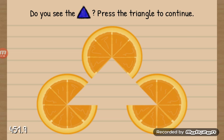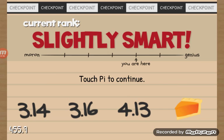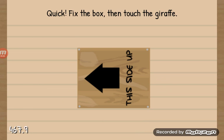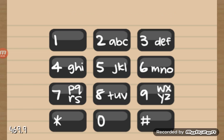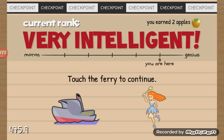Do you see the triangle? Press the triangle to continue. No. Come on. We're almost at 500 seconds. Okay, this is like two times worse. One, two, three, four, five, six, seven, eight, nine. Ah, there it is. Touch the fairy to continue.